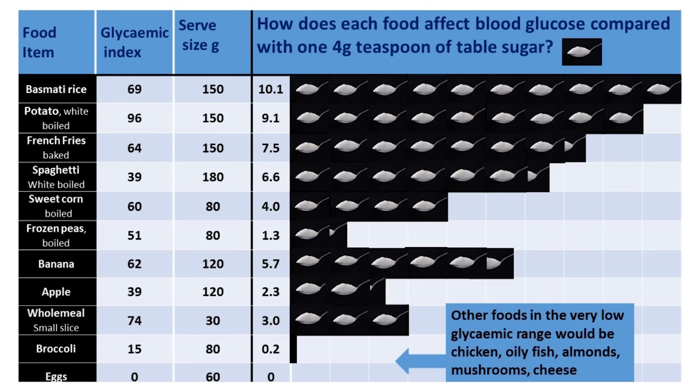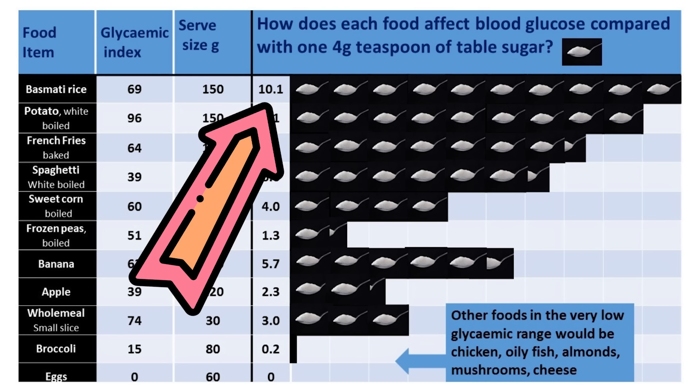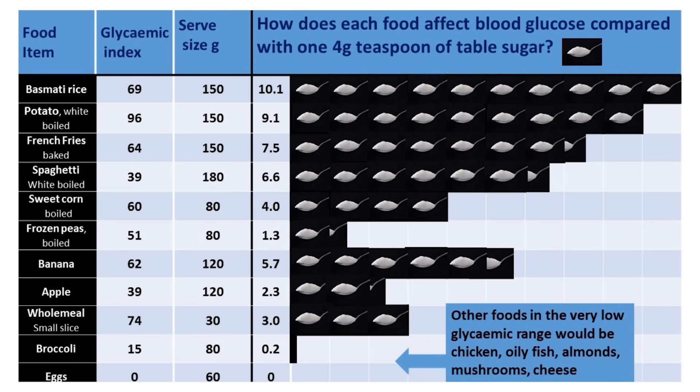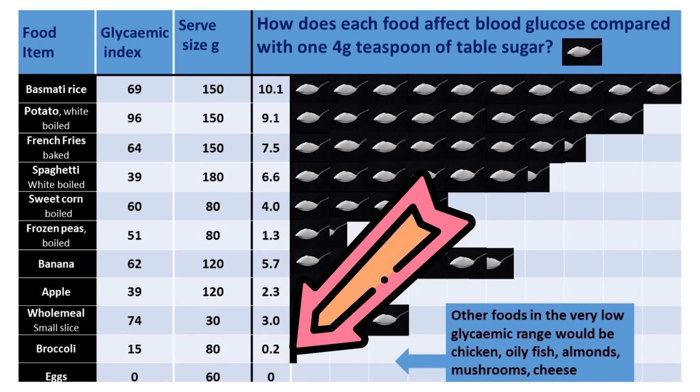There's a graphic here which shows you how to translate a food into teaspoons of sugar. A bowl of rice, for example, would translate to 10.1 teaspoons of sugar — that's a lot of sugar you're pouring into a body that already has too much. A potato translates to 9.1 teaspoons. If you switch to broccoli or eggs, broccoli translates to only 0.2 teaspoons and eggs is zero teaspoons of sugar. So while rice and eggs and broccoli might be the same calories, they're very different in terms of the sugar you're putting in your body.